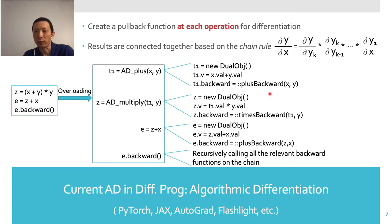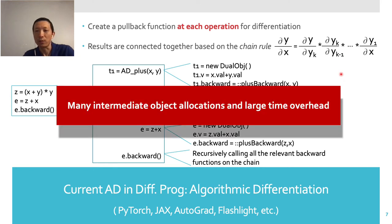And then it puts a pullback function plus_backward into t1. These pullback functions will be recursively invoked later, with each differentiating one single operation. The results are connected together through this chain rule in calculus to generate the final gradient. It is easy to see that this approach incurs many allocations of intermediate objects and also time overhead.